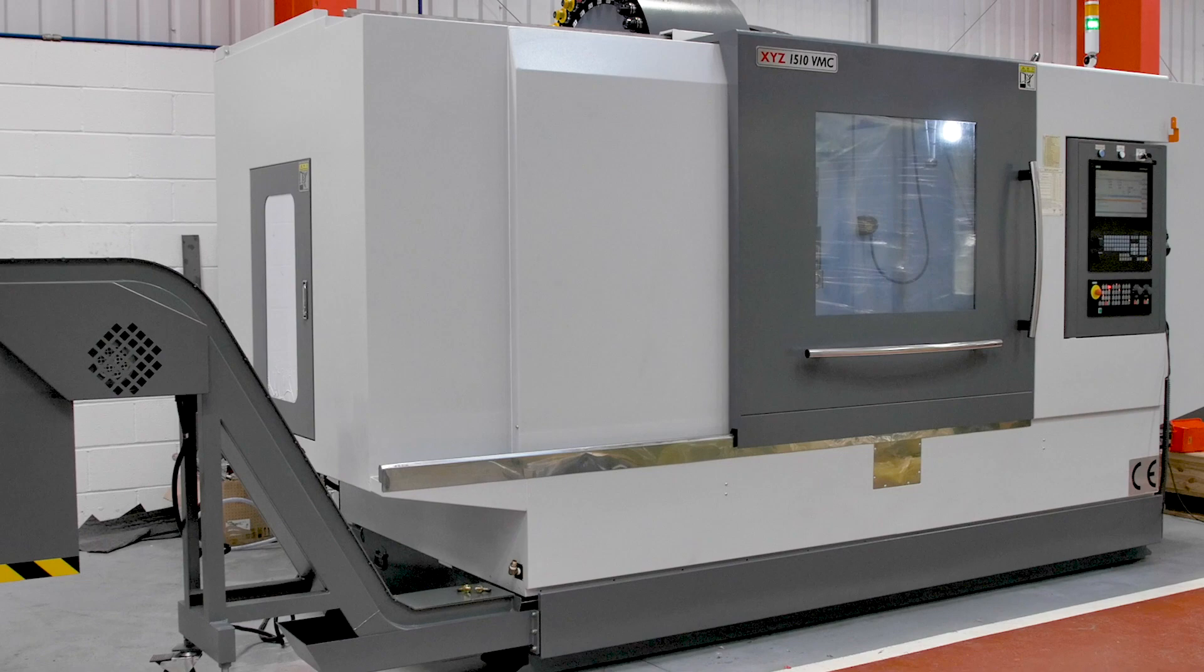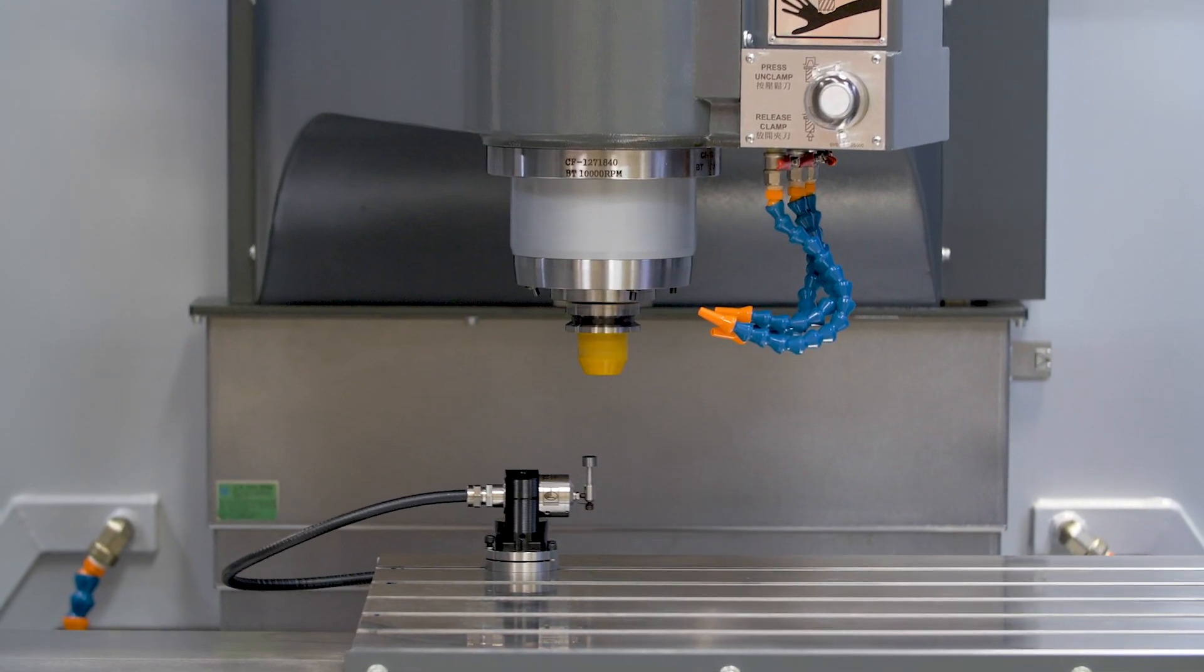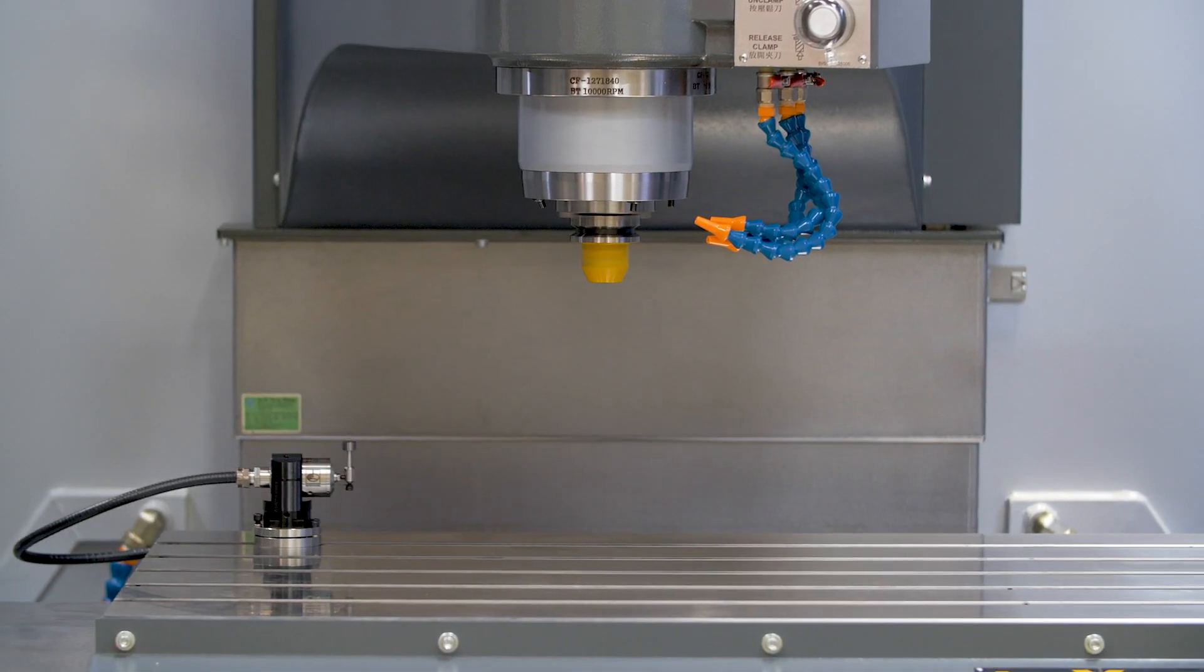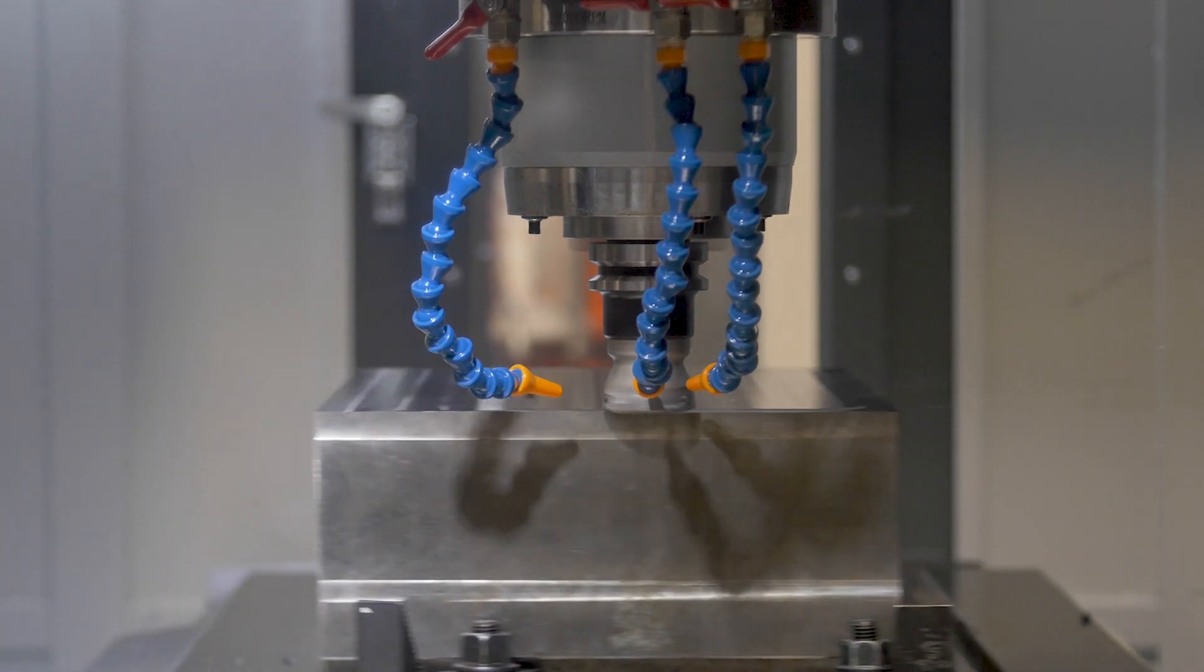The solid cast iron machine frame combined with its extremely wide base gives the table capacity of up to 1200kg. The table and saddle are also supported for the full travel of the machine.